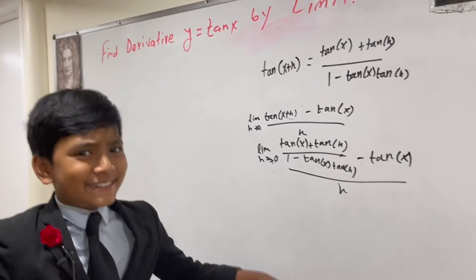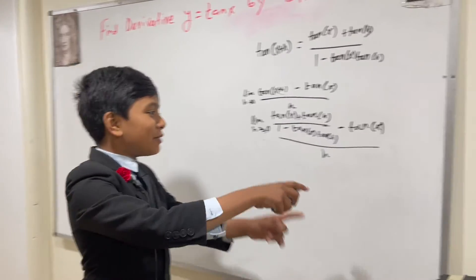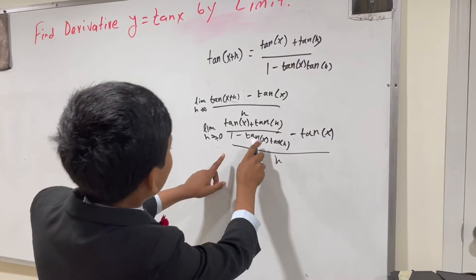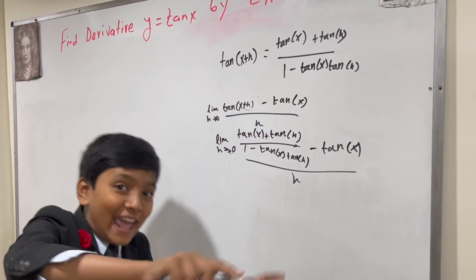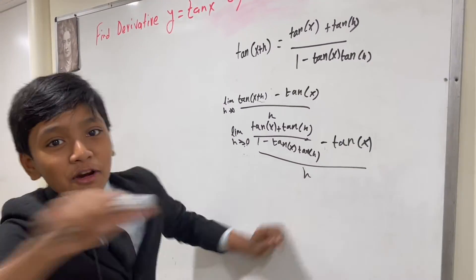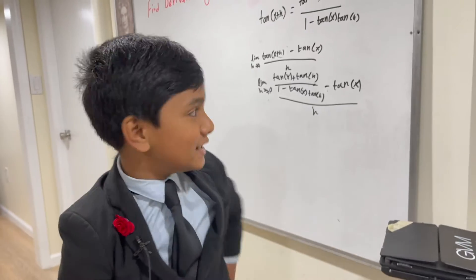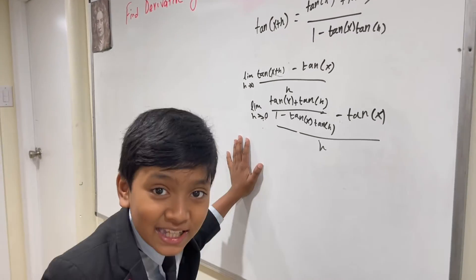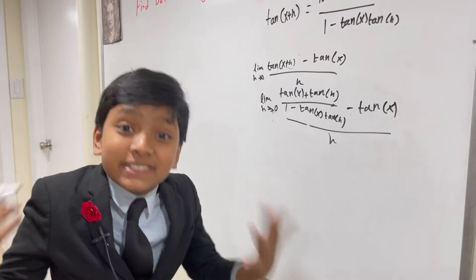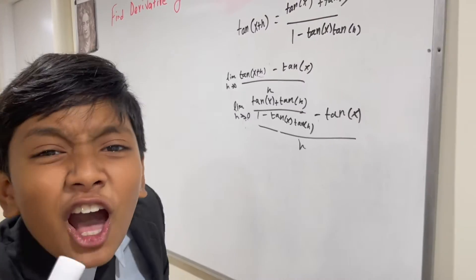Now, you might think this would be equal to t squared, a squared, n squared, x times h. Well, that's not how things work, buddy! This is a trigonometric function, not t, a, and n as separate variables.